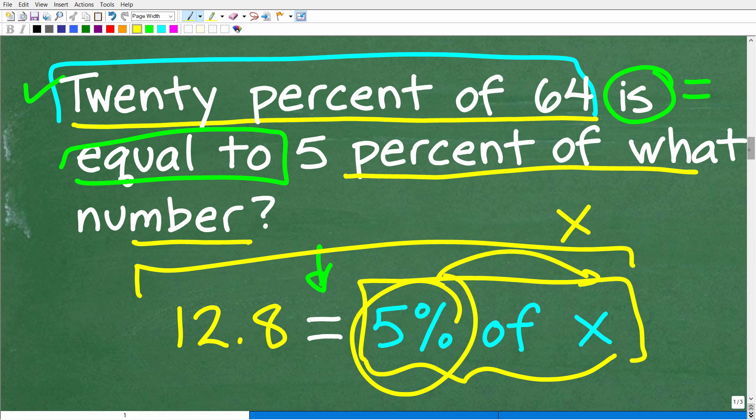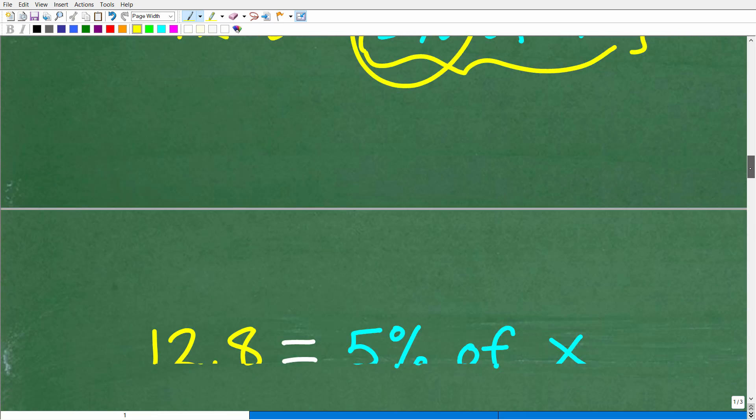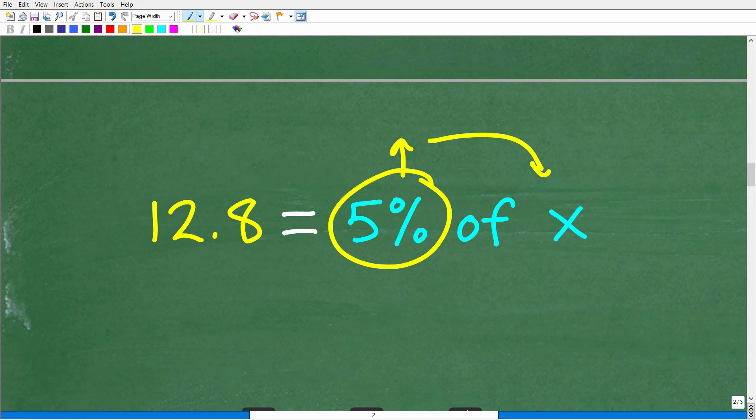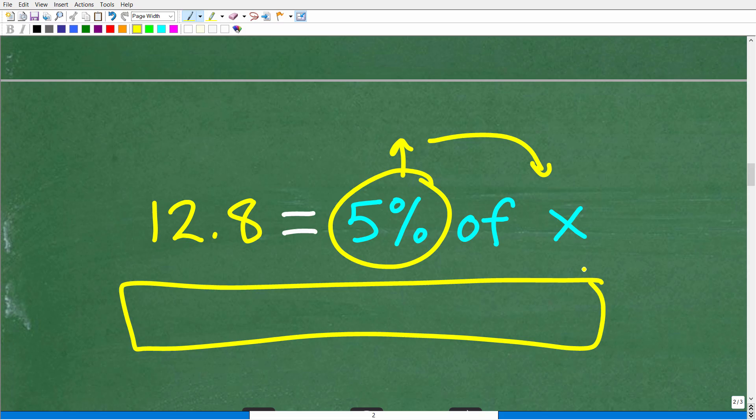So 20% of 64, we already know is 12.8, is equal to 5% of what number? So it's 5% of x. But right here, we're going to actually have to change this percent into a decimal and then multiply it by this variable. And we're going to end up with a lovely algebraic equation to solve. So hopefully you kind of see where this is going. Let's go ahead and do that right now. So 12.8 is equal to 5% of x. So go ahead and write this as a decimal and then multiply it by x and come up with your new equation. Of course, when you have that equation, try to solve that equation.